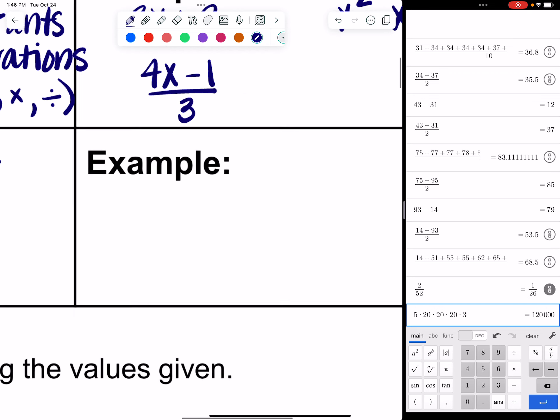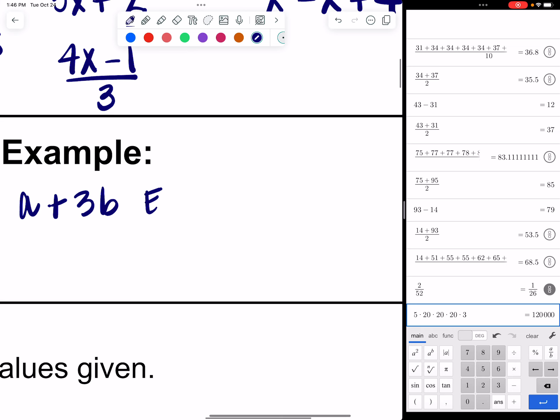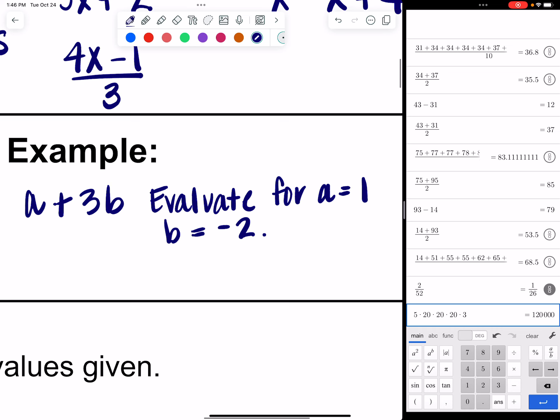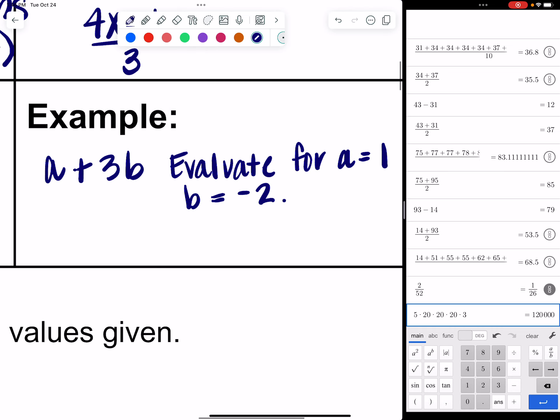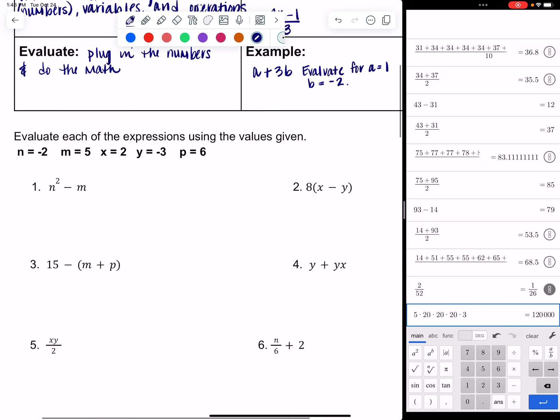An example might be, you have the expression A plus 3B. And we say, evaluate for A equals 1 and B equals negative 2. Well, that means we are going to substitute the 1 for the A, the negative 2 for the B, and we're going to do the math. So, let's go down here and see what that might look like.